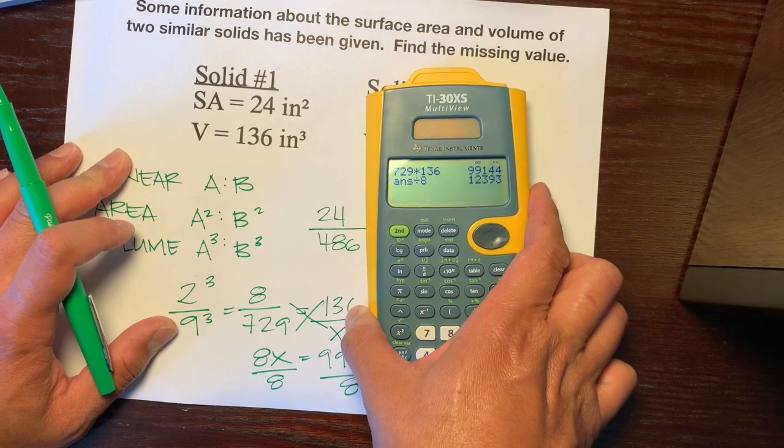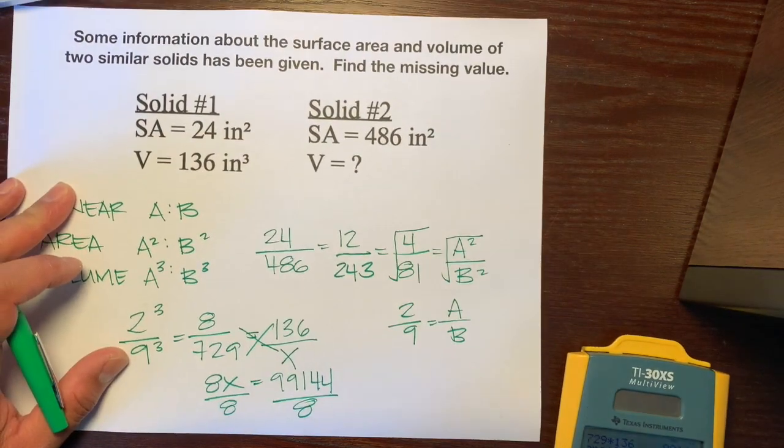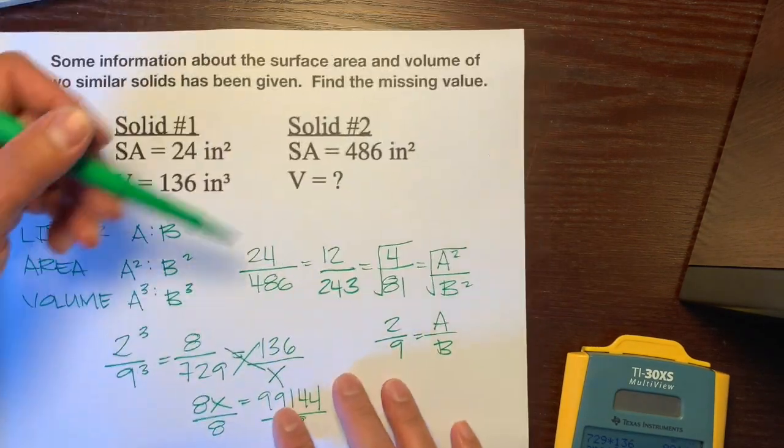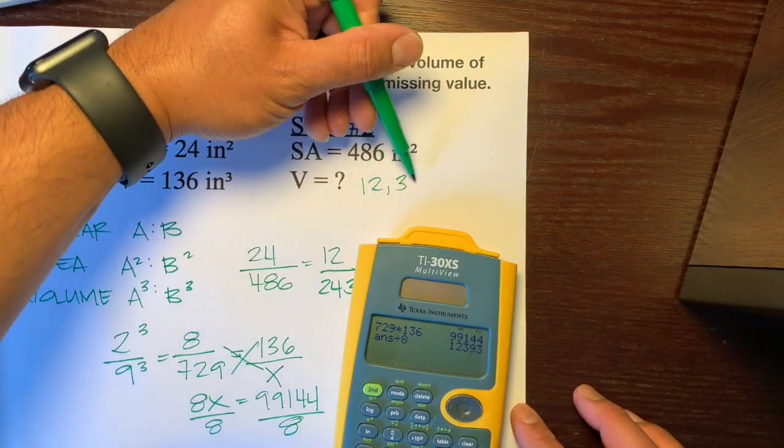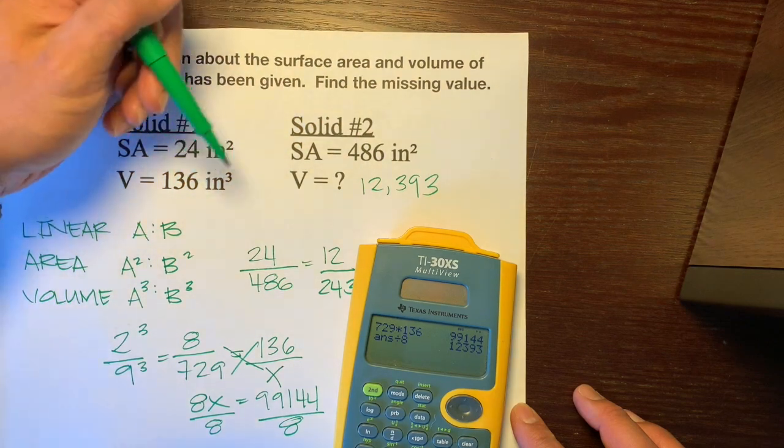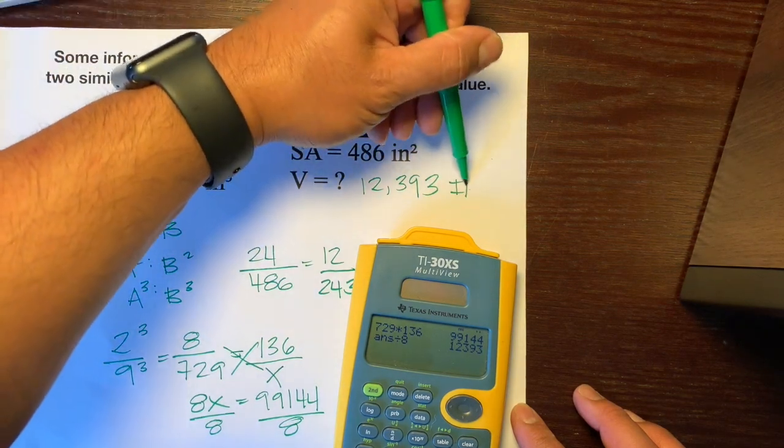So, what's that? 12,393. So, the volume, that missing volume is 12,393 inches cubed.